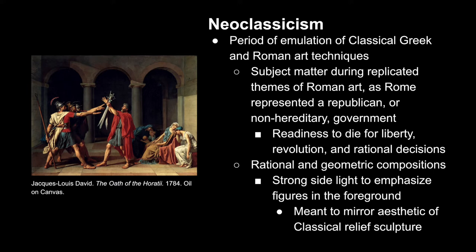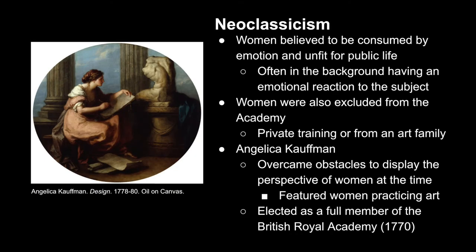We can see evidence of most of these conventions in this example from 1784. During this time period, women were believed to be consumed by emotions and thus unfit for public life. Even in that example, women were used in the background as emotional reactions to the foreground subject matter — they were more so visual tropes than subjects themselves. Women were also excluded from the academy, so to receive training to become artists, they would either need to be very wealthy and receive private training, or be in a family that has an artist in it. Commonly, the situation is a daughter learning from her father.